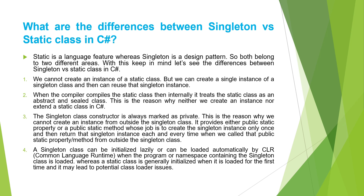In C#, we cannot create an instance of a static class, but we can create a single instance of a singleton class and then reuse that singleton instance throughout the application. When the compiler compiles the static class, it internally treats the static class as abstract and sealed. This is the reason why we can neither create an instance nor extend a static class in C#.